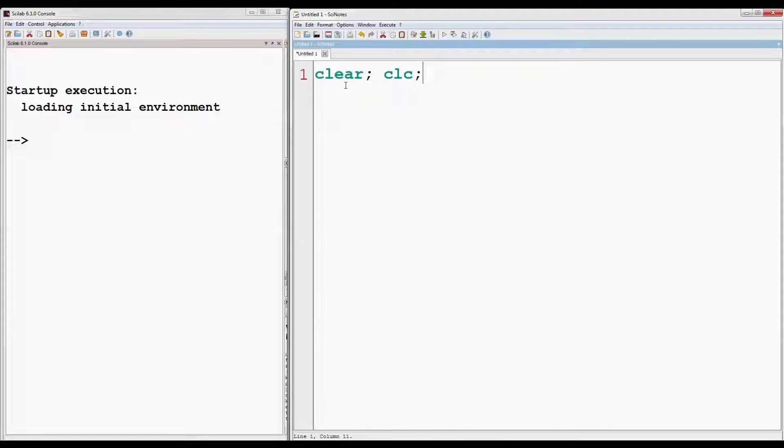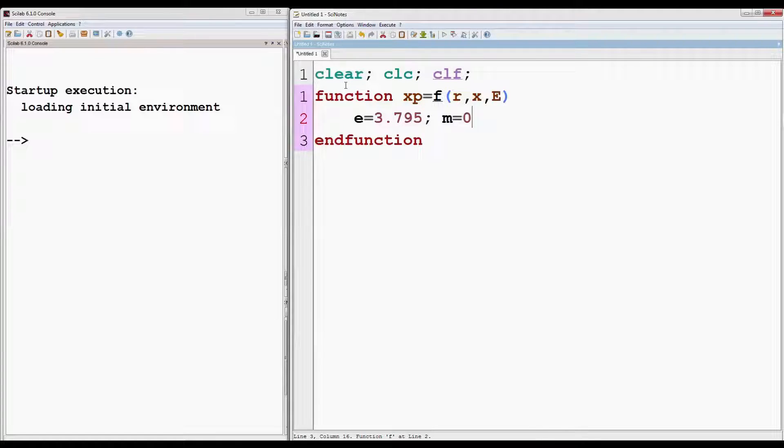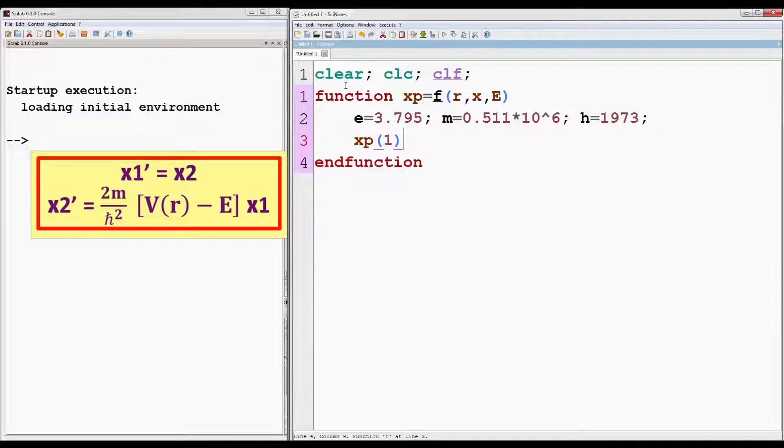Clear, CLC and CLF are to clear the variables, console area and reset the figure properties respectively. First define the function for differential equations. F is the name of the function. r and X are the variables and E is the energy that we are going to vary. Then define the constants.